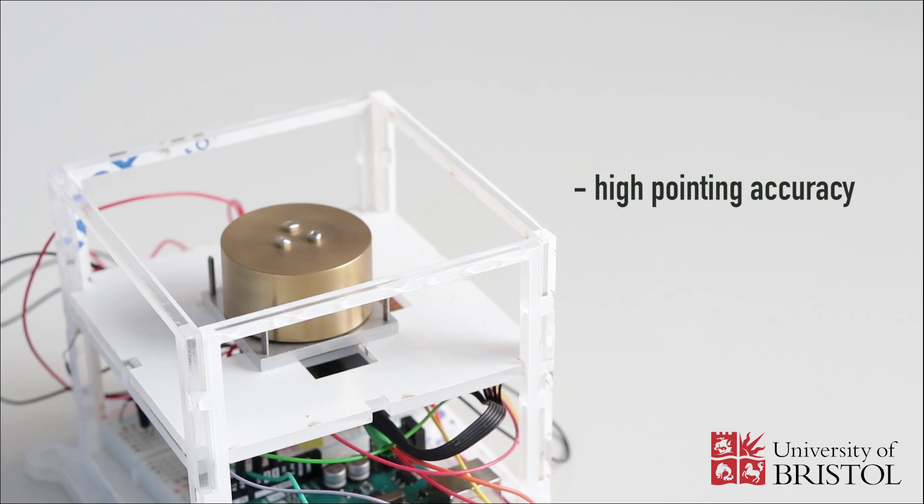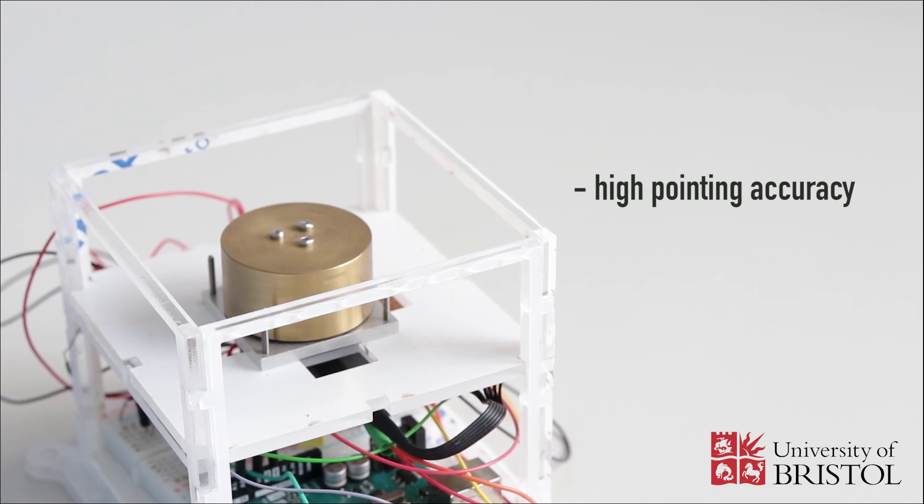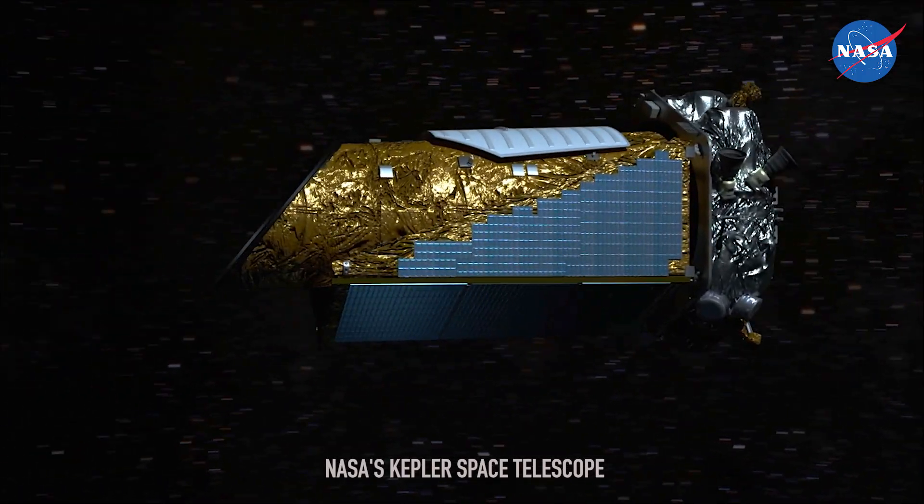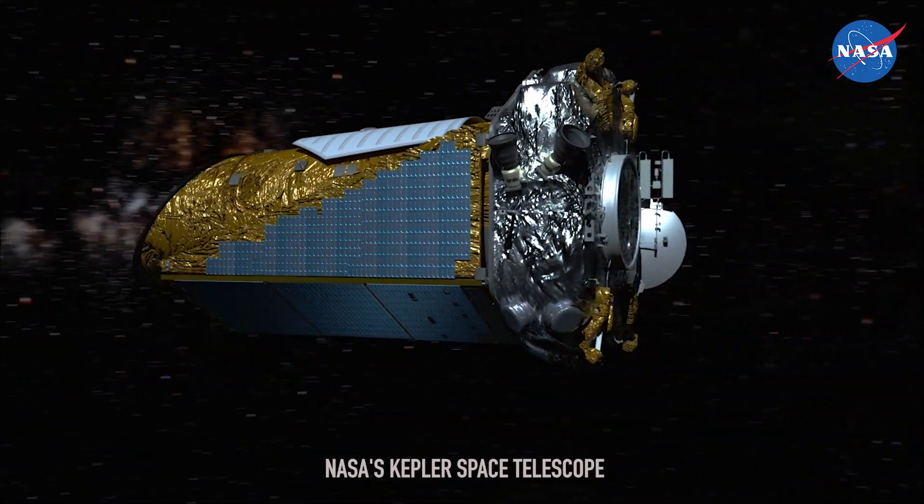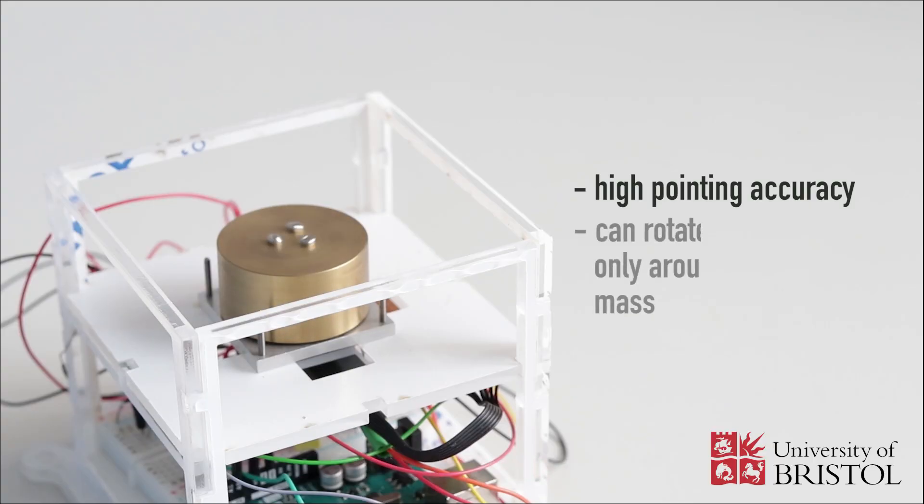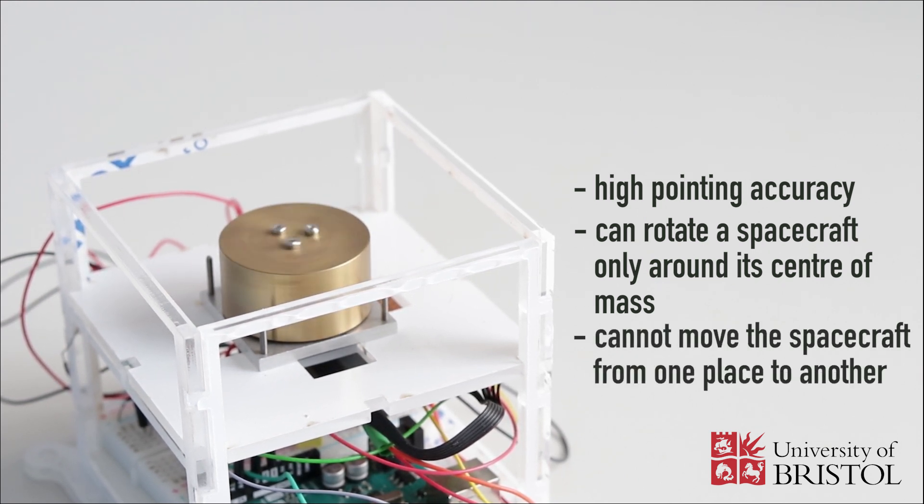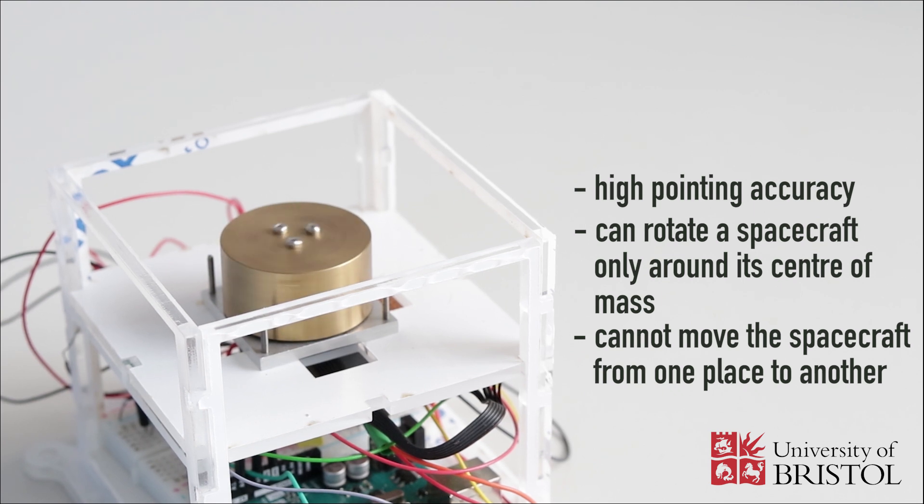Reaction wheels can provide high pointing accuracy and are very useful in cases when a spacecraft needs to be rotated by very small amounts. For example, they can keep a telescope pointing at a distant exoplanet. However, reaction wheels can rotate a spacecraft only around its center of mass. They are not capable of moving the spacecraft from one place to another.